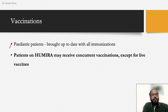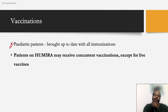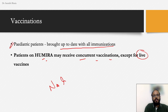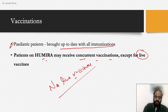For pediatric patients receiving adalimumab (approved for pediatric ulcerative colitis and Crohn's disease), ensure all immunizations are up to date. Concurrent vaccinations are allowed, but absolutely no live vaccines, as these carry a serious risk of reactivation of infection in immunosuppressed patients.